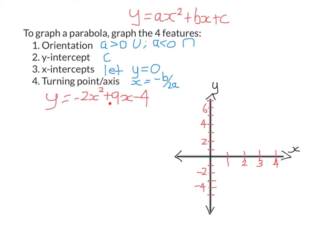Let's graph this function. Here a is negative 2, b is positive 9, and c is negative 4. Step one: because a is negative, this is going to be a frowny face — upside down. If a were positive, it would be a smiley face. Step two: the y-intercept is just the value of c. Here c is negative 4, so the y-intercept is negative 4.